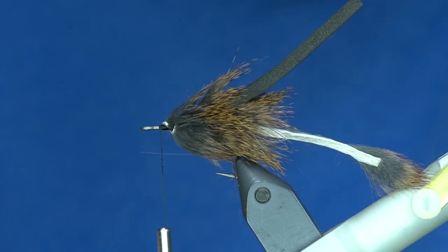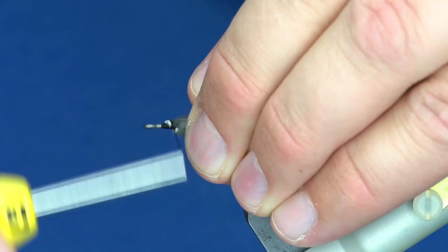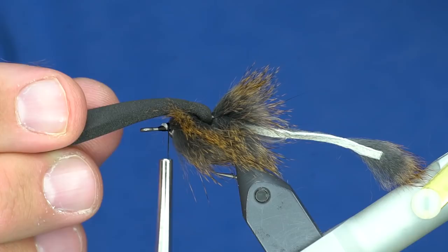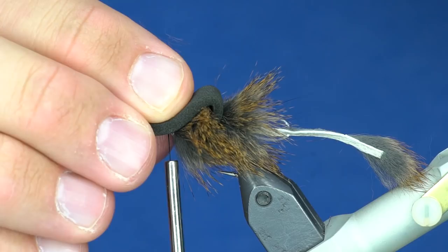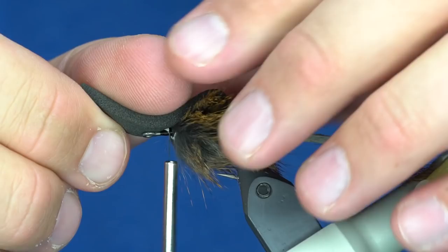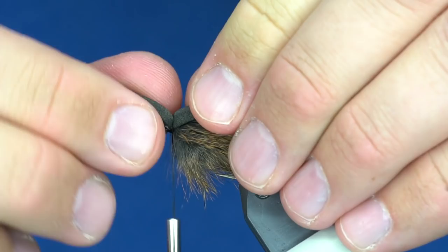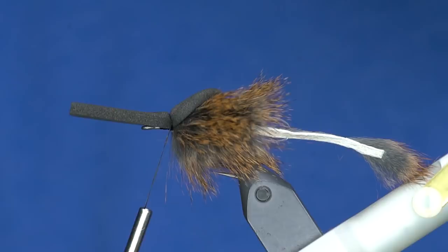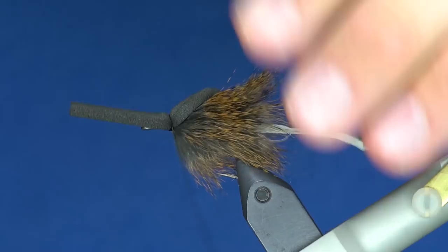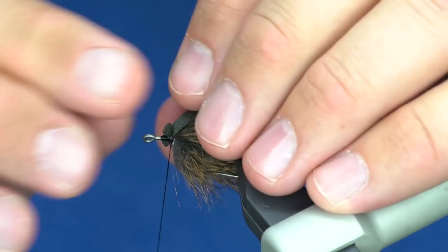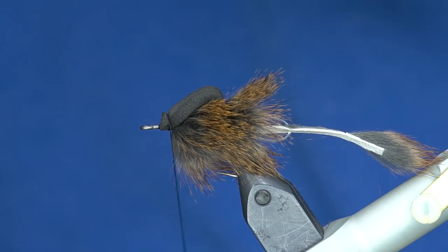I'll moisten my fingers again and preen those fibers out of the way. Now when I fold this foam over the top, I don't want to pull it tight. What I want to do is fold it and then push it back to create a little bump on the butt - that's another saltwater trick. I'm going to push it back like this and then tie that in. Yes, you could fish it just like that, trim the head - you've got a good mouse pattern, but we're going to show you how to get it to swim real nice.